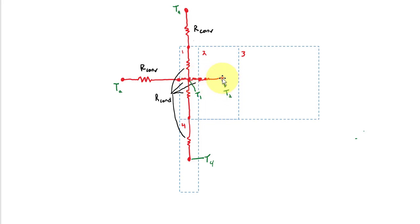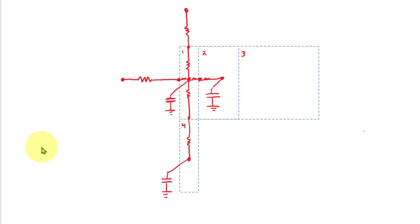Similarly, we have temperatures at the center of control volumes 2 and 4. Assuming the cell is placed into a hotter environment, heat flows from the ambient into control volume 1 through convection and conduction, and from there the heat flows to control volumes 2 and 4 through conduction. We also have to account for the thermal inertia of each control volume, so at the node at the center of control volume 1 we've added a capacitor element representing the heat capacity — that would be the mass times the specific heat capacity of that control volume. The same applies at control volumes 2 and 4.